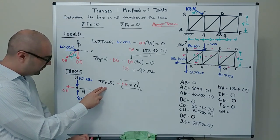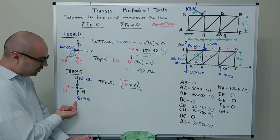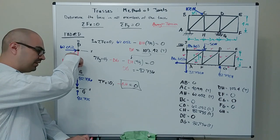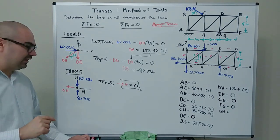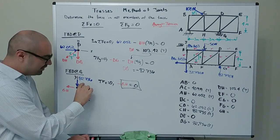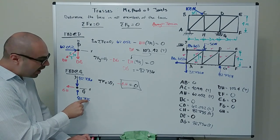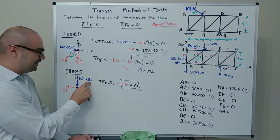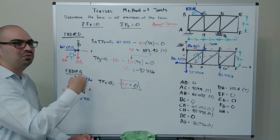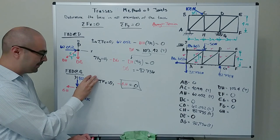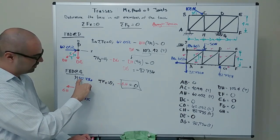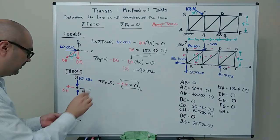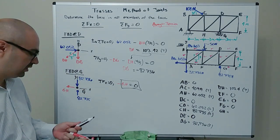Summing forces in y at G: positive 82.735 minus 82.736 equals essentially zero — the tiny difference is just rounding carry-over. This confirms our results. We've now solved all members of the truss.